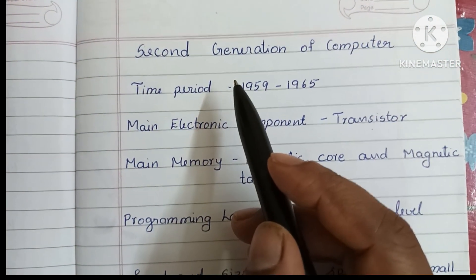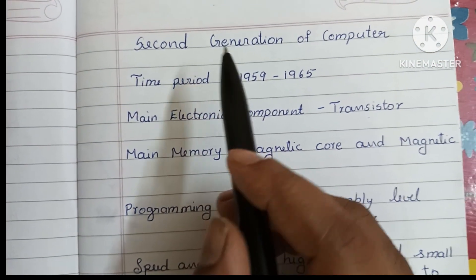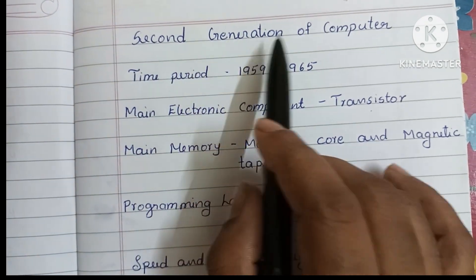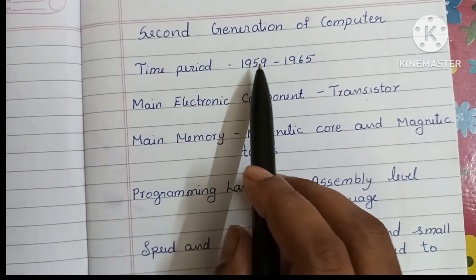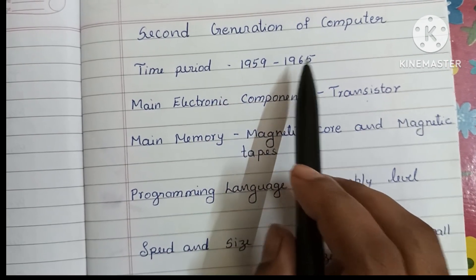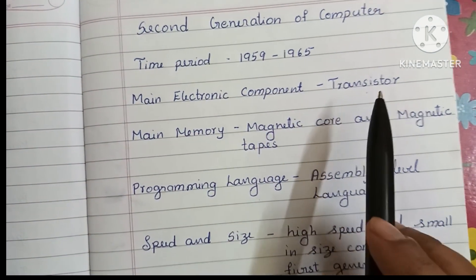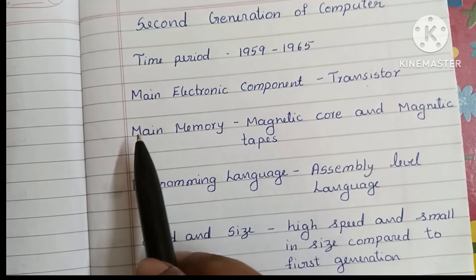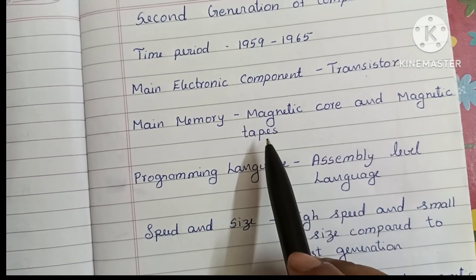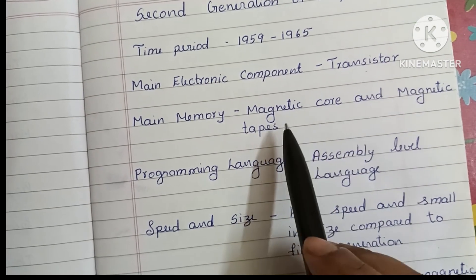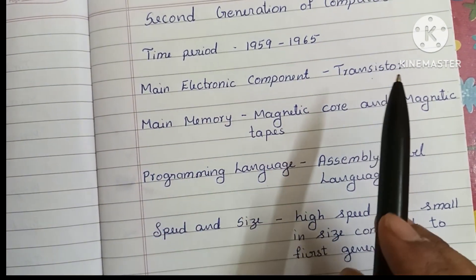Hi guys, welcome to my YouTube channel. In this video we are going to learn the characteristics of the second generation of computers. The time period of the second generation of computers is 1959 to 1965. The main electronic component used is the transistor. The main memory is magnetic core and magnetic tapes.